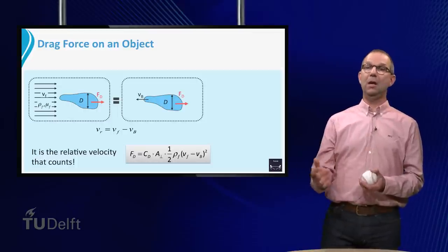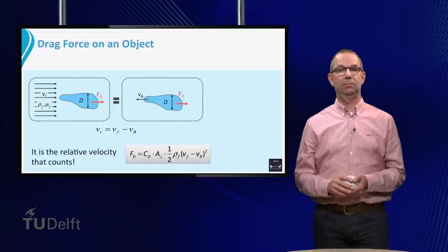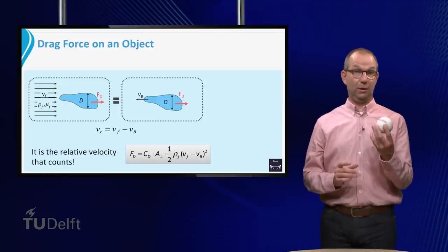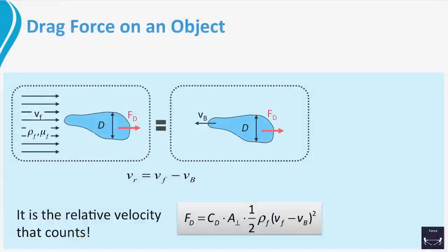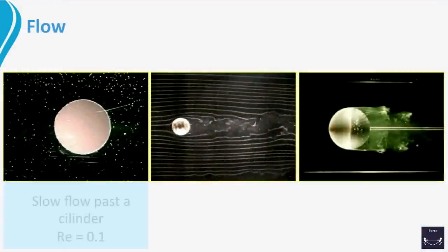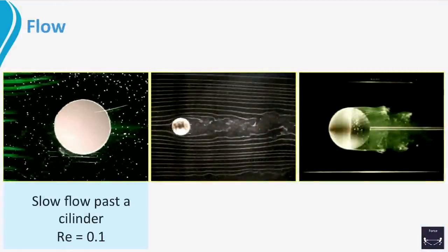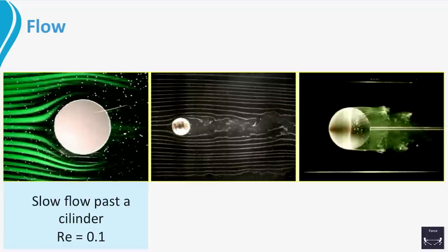The drag coefficient CD is depending on the Reynolds number and thus also on the velocity. We can see this by looking at the flow around a sphere at various velocity, or better, at various Reynolds numbers. In the first movie we will see a cylinder placed in a fluid. The fluid will start flowing from left to right and its motion is made visible by green dye.